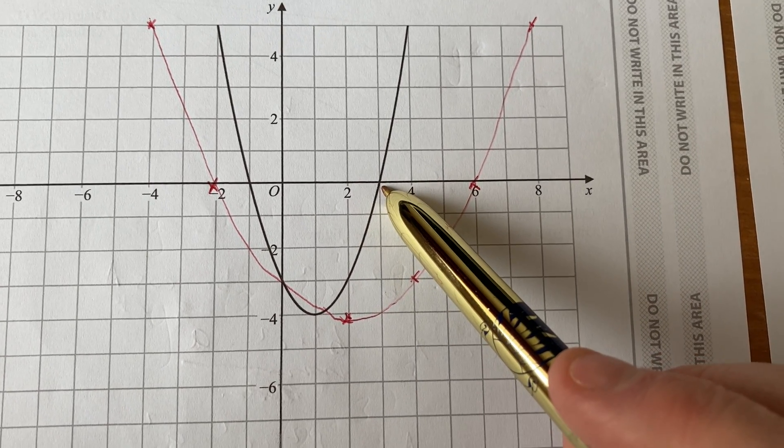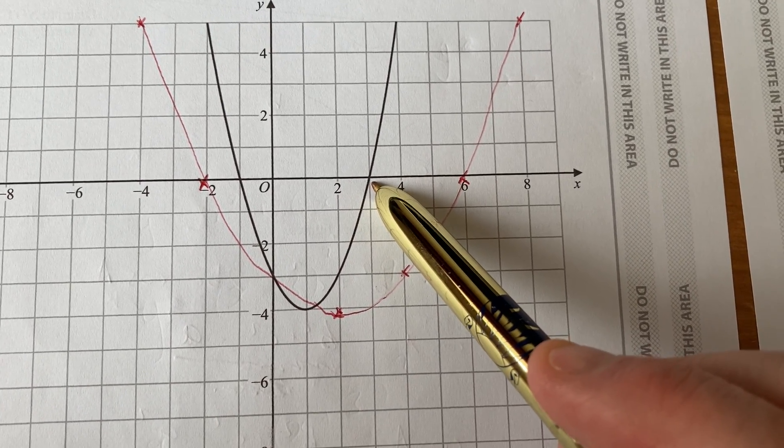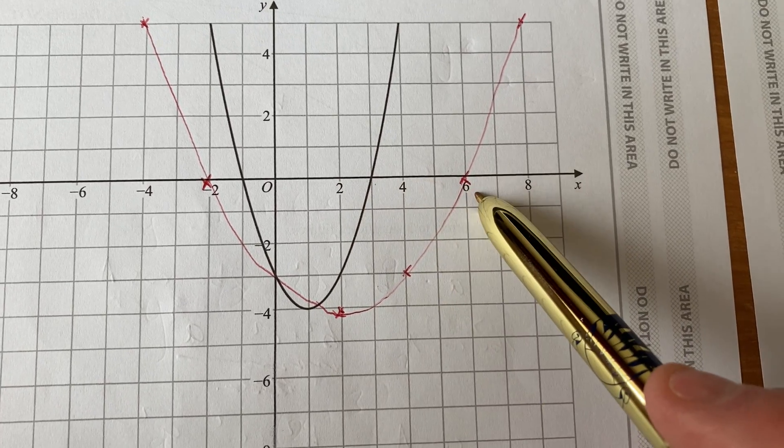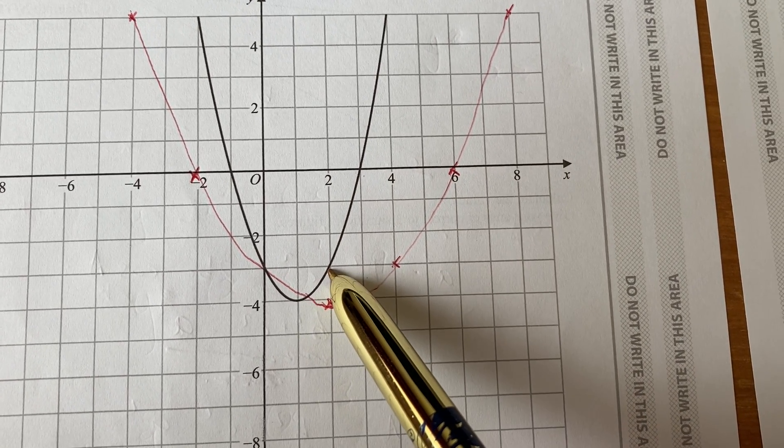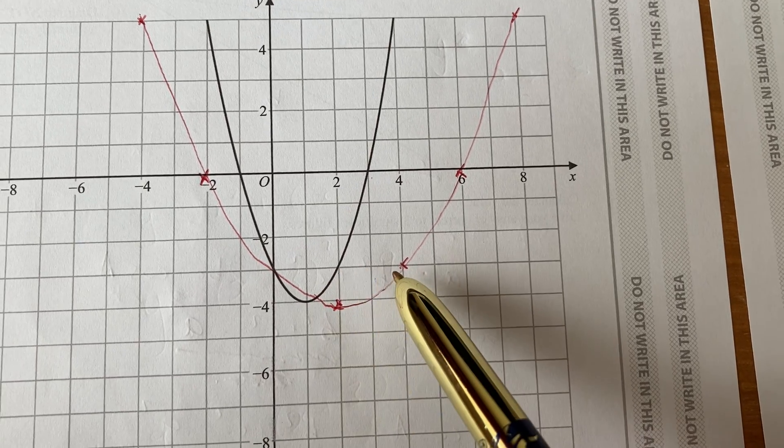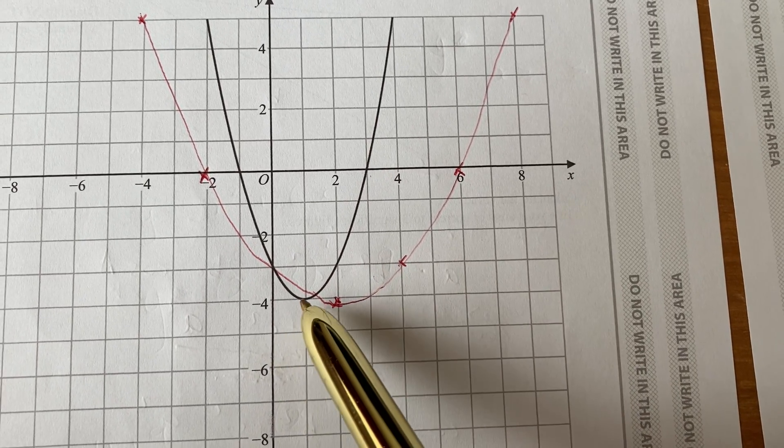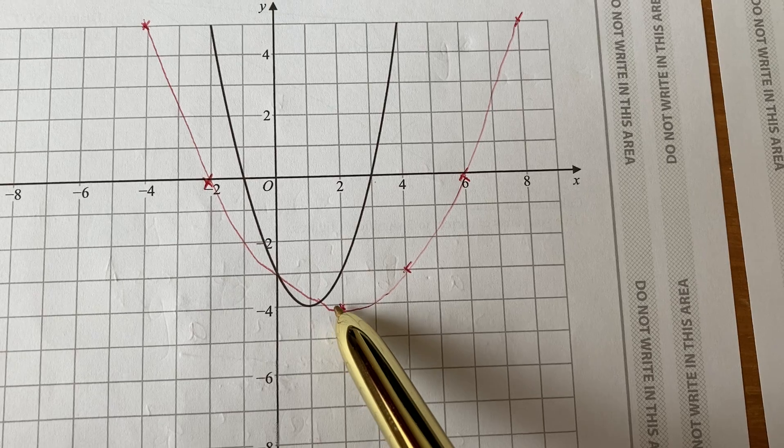So this one that is 3 from the y-axis doubles out to be 6. This nice one here that is 2 away from the y-axis comes out to be 4. The one at the bottom that is 1 away becomes 2 away.